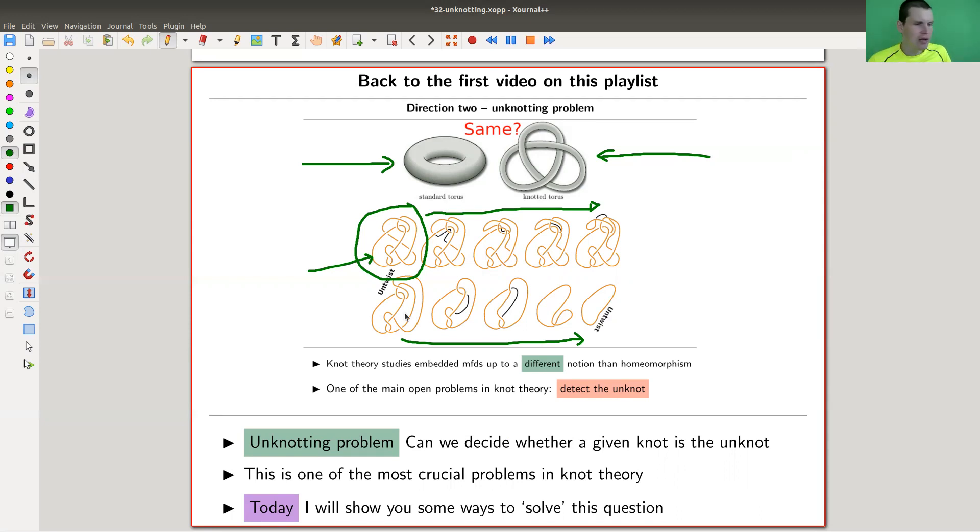It's really a crucial question, and from the outside, it's not so easy. Most knot invariants, as we've seen, kind of fail to solve this problem. They are not strong enough. There's always some knot which has the same invariant as the unknot, but it's not the unknot, so we can't use that.